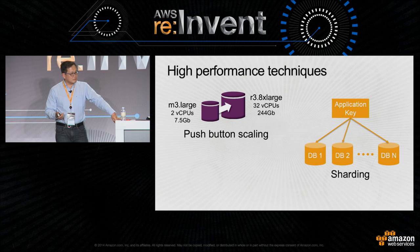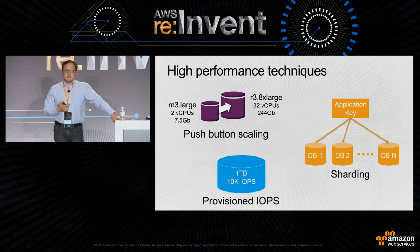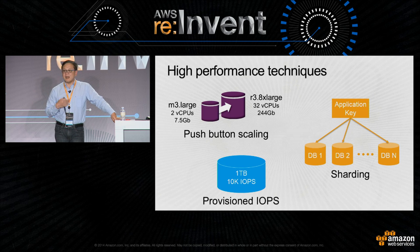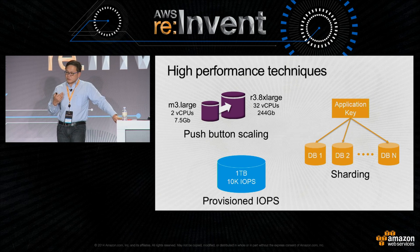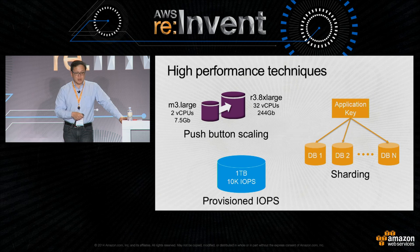Sharding is not automatic, but with RDS SQL Server we allow you to spin up hundreds, if not thousands, of these servers very easily. If you want to improve IO performance, you can purchase GP2 or provisioned IOPs storage for higher IO throughput. Currently, SQL Server has a one-terabyte and 10,000 IOPs limit, but you can use sharding to overcome those limits. You can use any one of these three techniques in combination or individually.